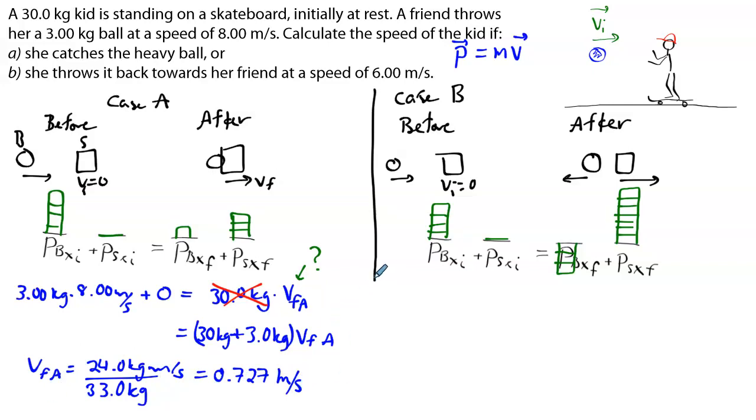Alright, case B now. So if we look at case B, very similar. We start in the same way, so we will still have the 3 kg ball moving at 8 meters per second, plus 0 for the momentum of the skater, will be equal to, and that's where it's different. We still have the mass of the ball, 3 kg, but now we have to multiply by its speed on the x-axis. And this one will be negative, so we'll have minus 6 meters per second, plus the mass of the skater, 30 kg, times the final velocity for case B.